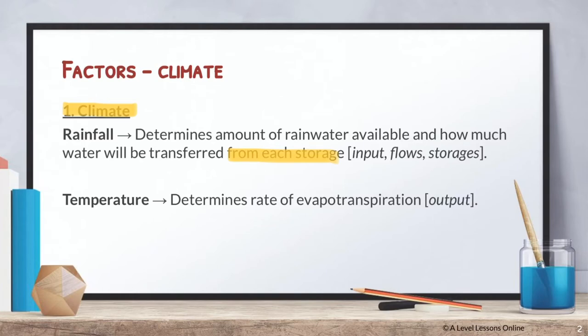Rainfall is the most important factor because without rainfall there won't even be an input, and without an input there won't be flows, storages, or an output. So rainfall in the form of your input has a domineering, controlling influence over the entire drainage basin hydrology — it cannot function without it.